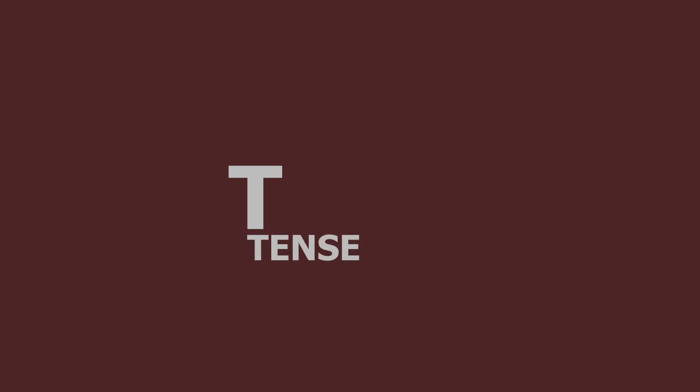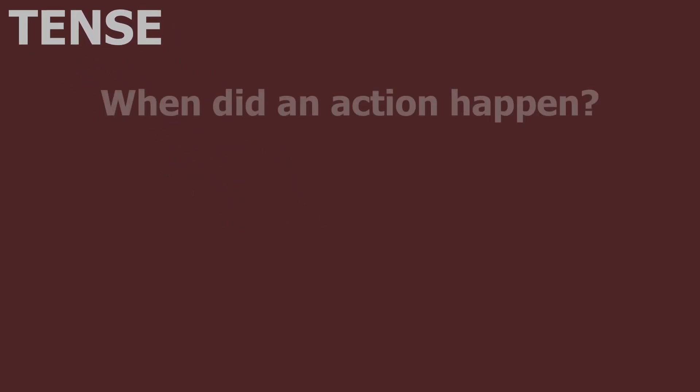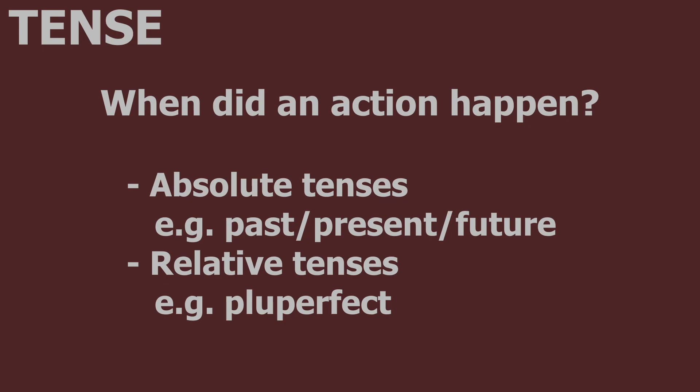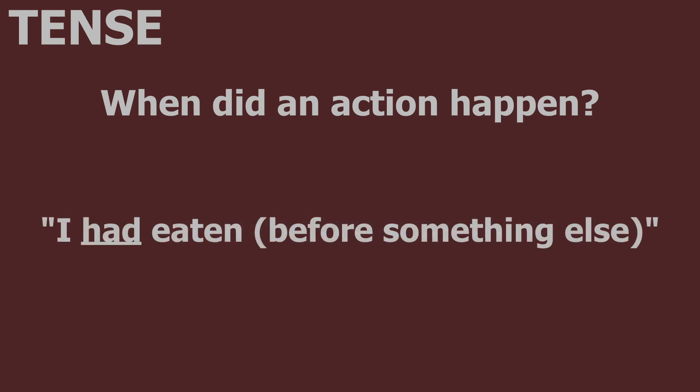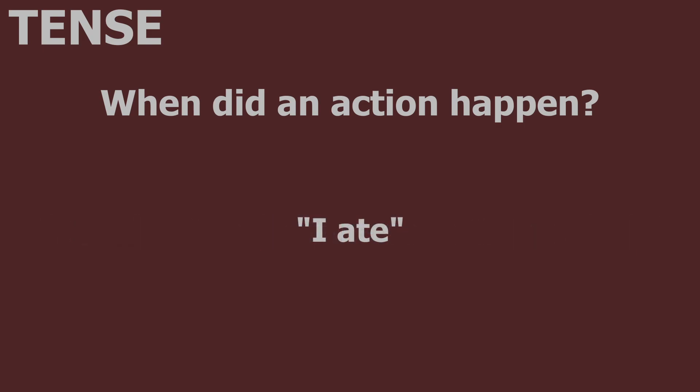Let's start with the easiest one, and the one you could probably explain yourself: tense. Put simply, tense has to do with time — when did an action happen? Tenses can be absolute, indicating a time in comparison only to the present moment. They can also be relative, where one event is compared to another. An example of a relative tense is the pluperfect, e.g. 'I had eaten.' By contrast, the simple past 'I ate' gives no specific information besides the fact that it occurred before the present moment.